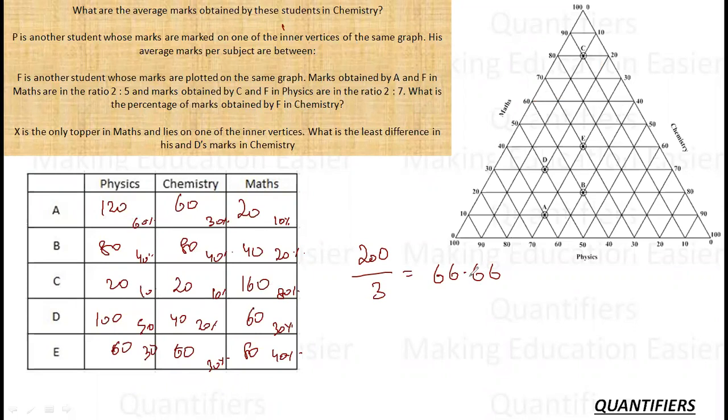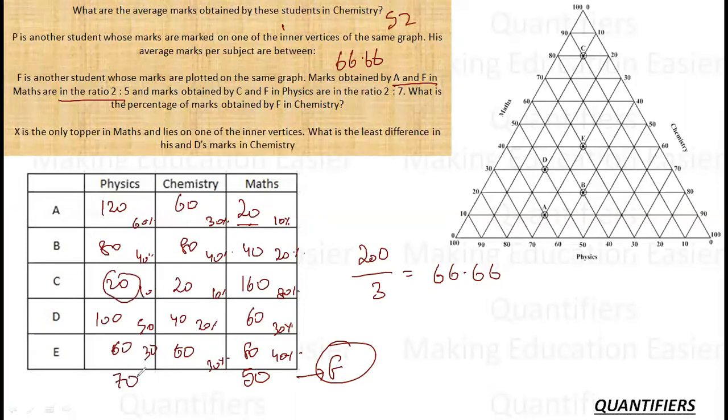Now let's think about the other thing. It is shown that F is another student whose marks are plotted on the same graph. Marks obtained by A and F in Math are in ratio 2 is to 5. So if this 2 is 20, 5 is 50. This is talking about F student. And marks obtained by C and F in Physics are 2 is to 7. So here it must be 70. So in Chemistry, it must be 80 because the total is always constant 200. So this way, if this is 50, this is 70, this must be 80. Now if this is 80, the percentage marks will be 80 upon 200 into 100. That is 40% marks. So 40% is the result for this.